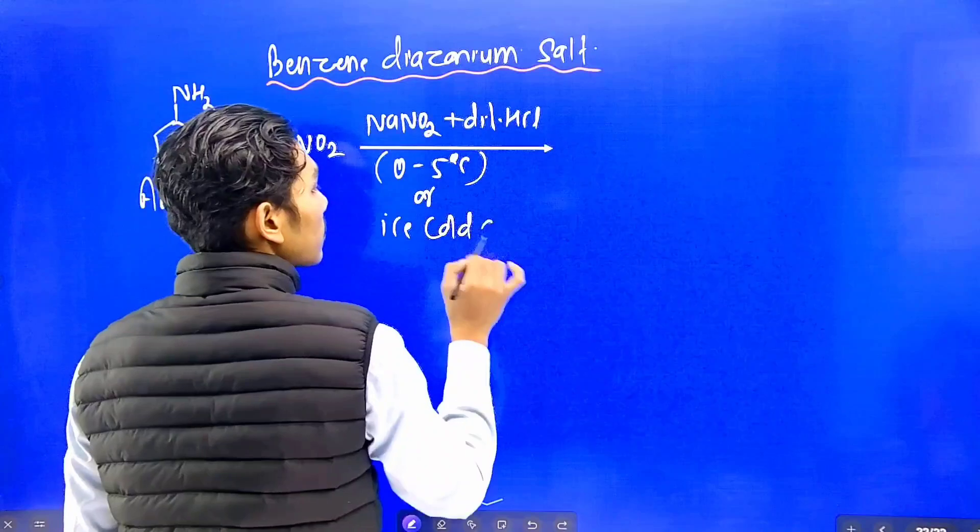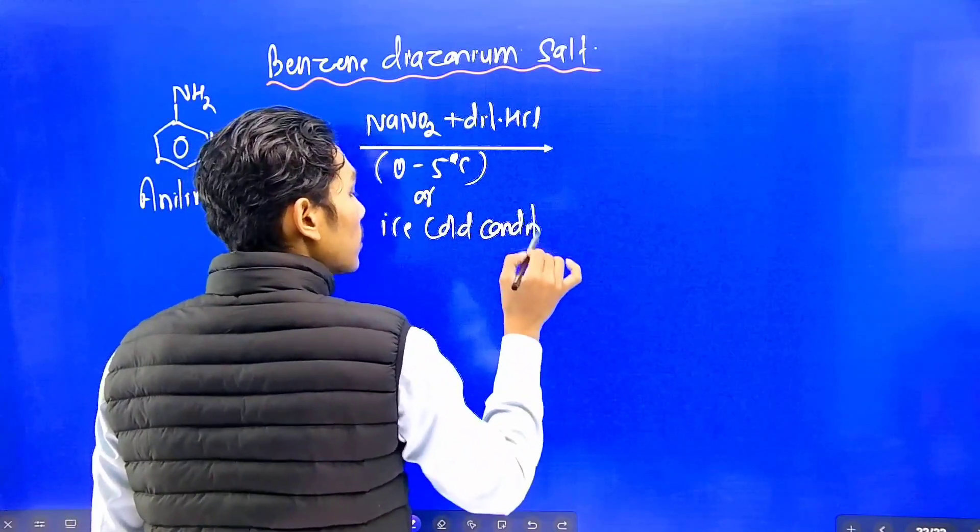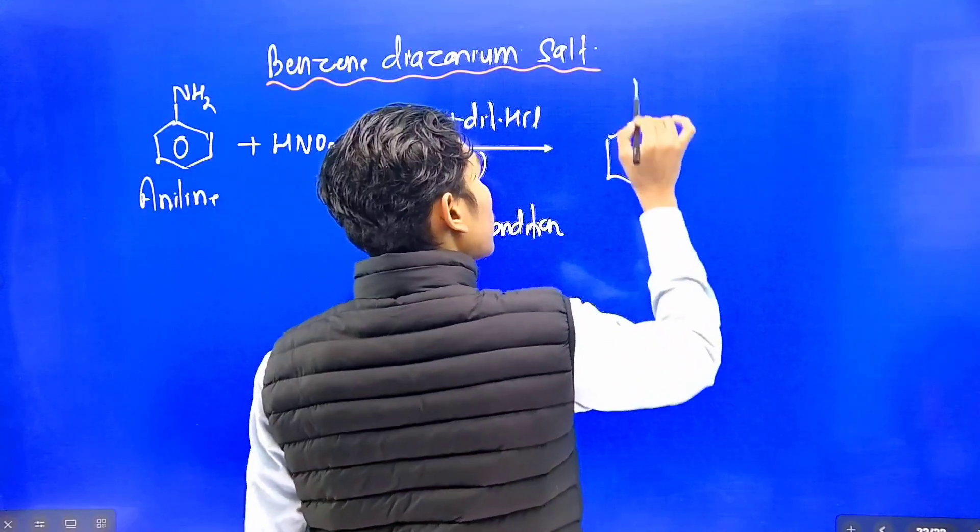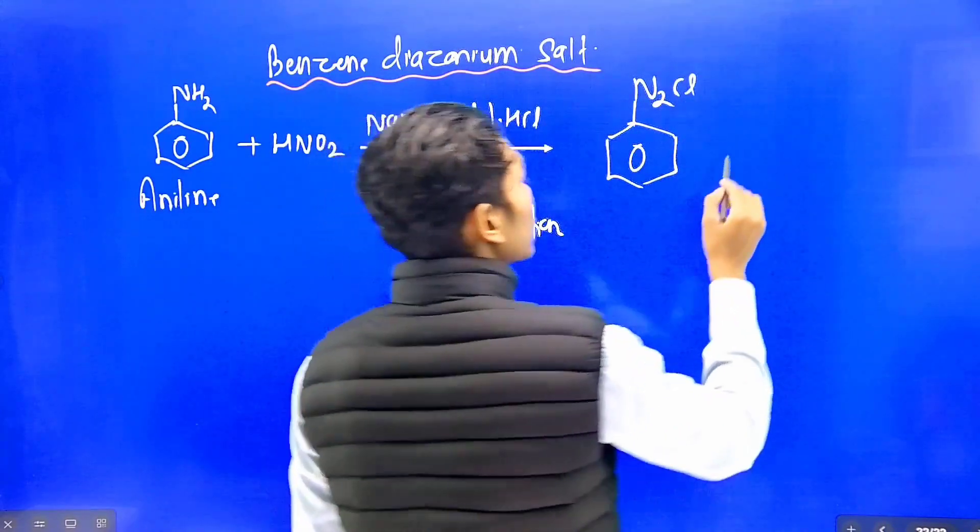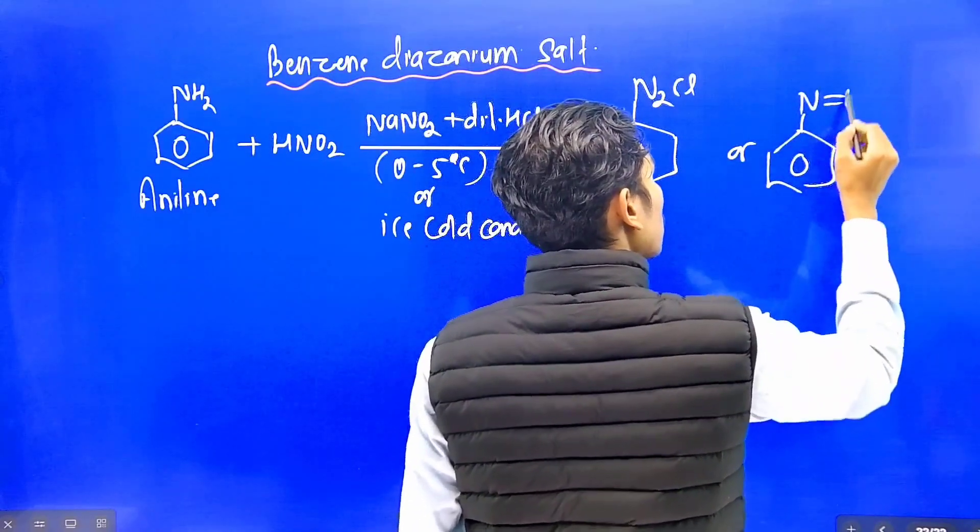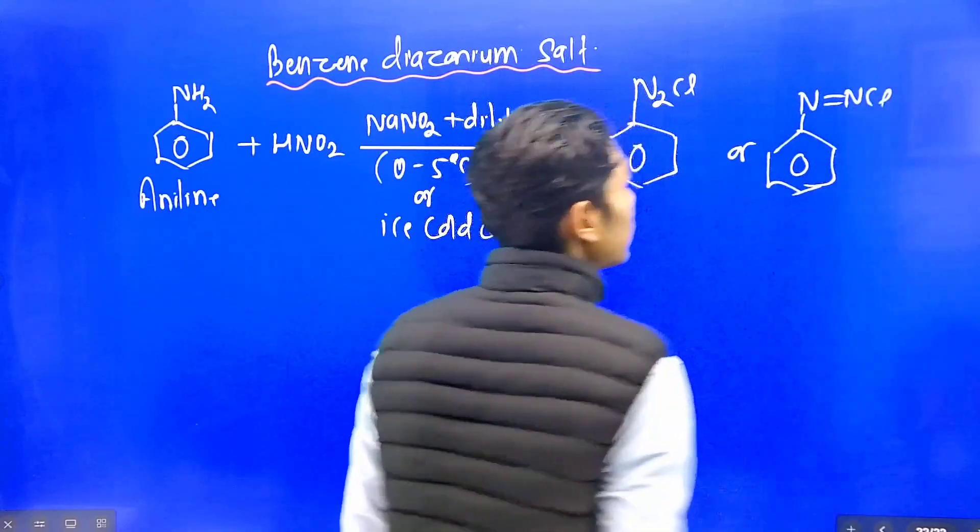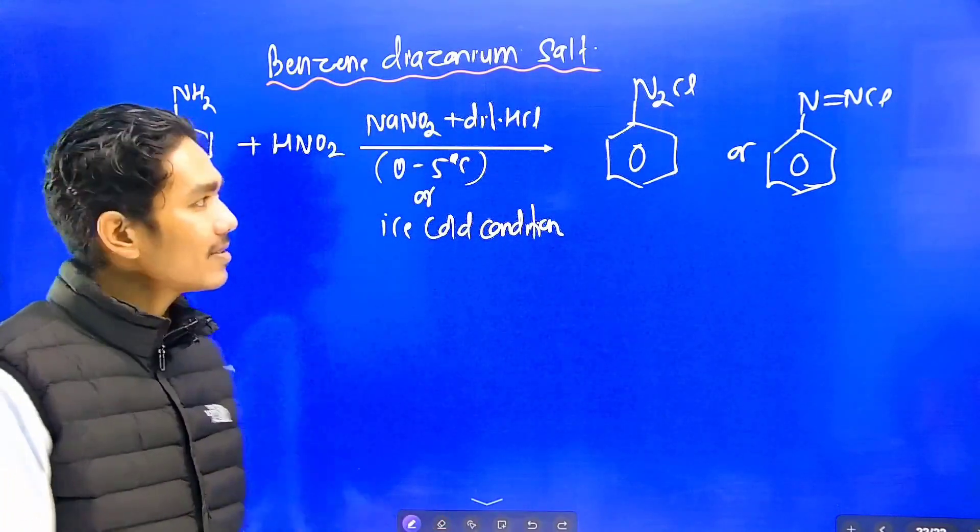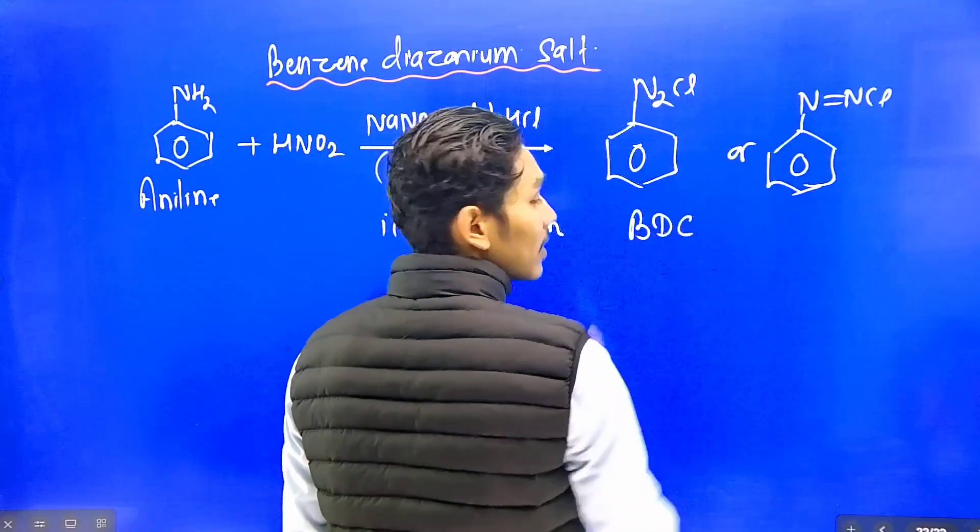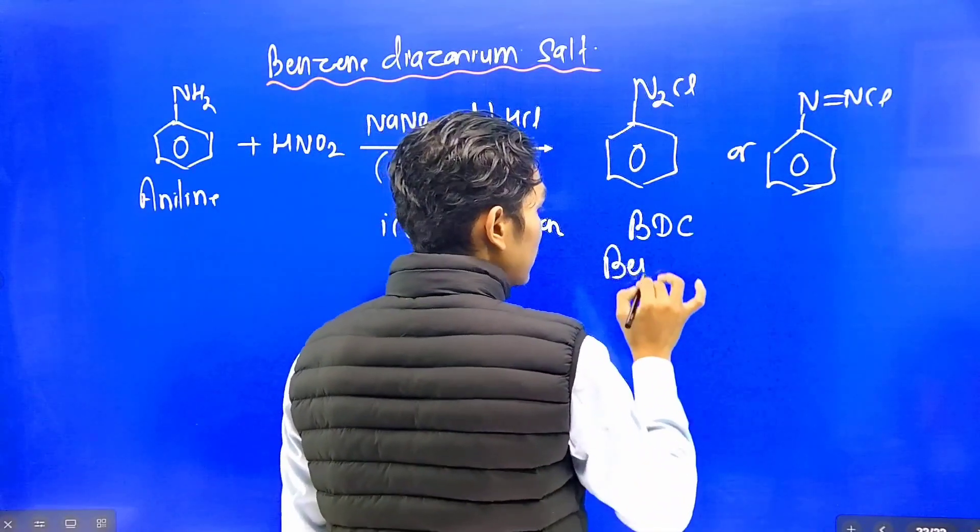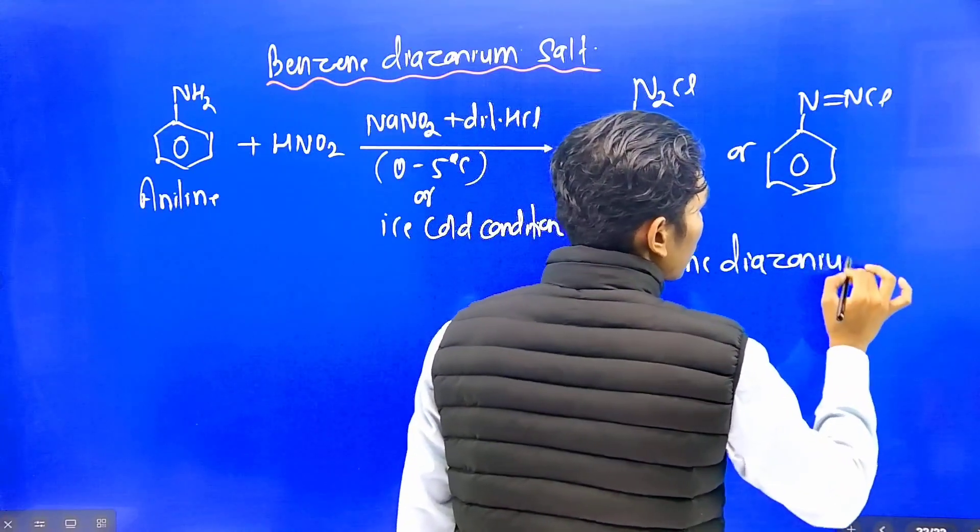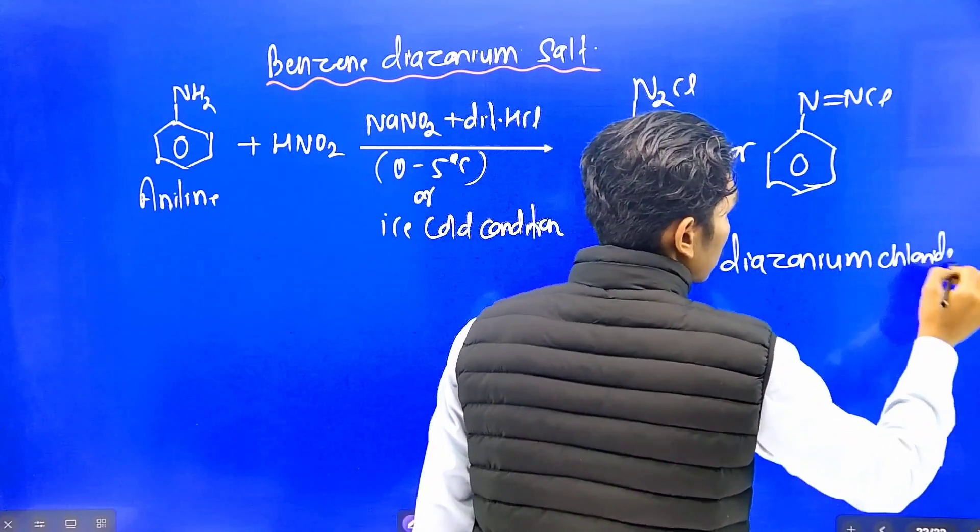Under ice cold conditions, when we react aniline with nitrous acid in the presence of diluted HCl, we get benzene diazonium chloride. The structure has a benzene ring with N double bond N plus, that is benzene diazonium chloride.